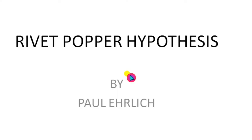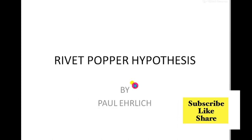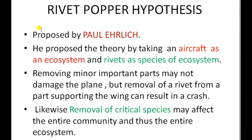Welcome. Today we learn what happens if one or few species are lost from the ecosystem and what may be the effect on man's life. To answer these questions, a scientist named Paul Ehrlich conducted an experiment and proposed the hypothesis known as the Rivet Popper Hypothesis.